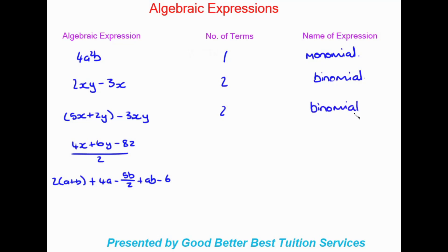Looking at the next one, the three terms on top are separated by a positive and a negative, but this is another exception: if it is all in one fraction, we count the entire fraction as one term. So everything over one number in a single fraction counts as one term, and we call that a monomial.